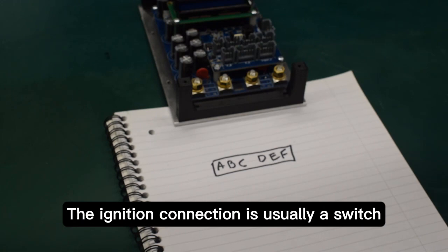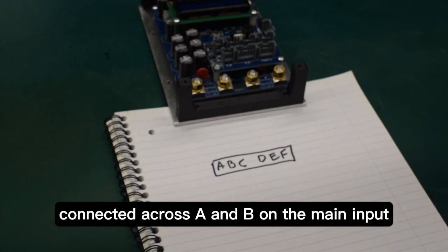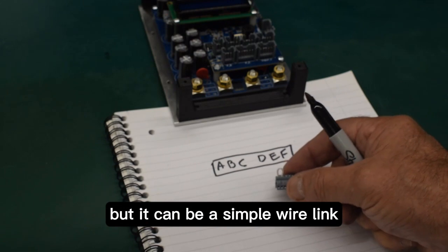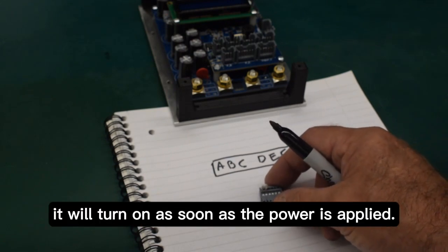The ignition connection is usually a switch connected across A and B on the main input, but it can be a simple wire link in which case it will turn on as soon as the power is applied.